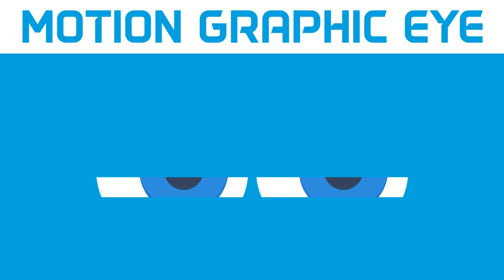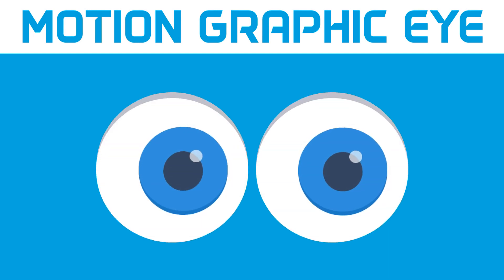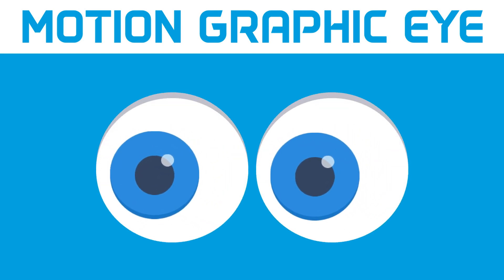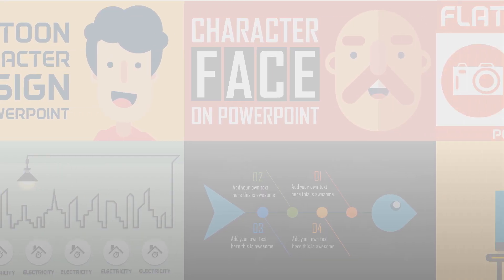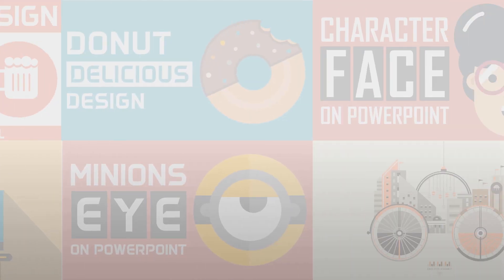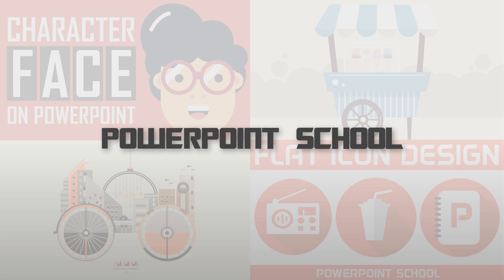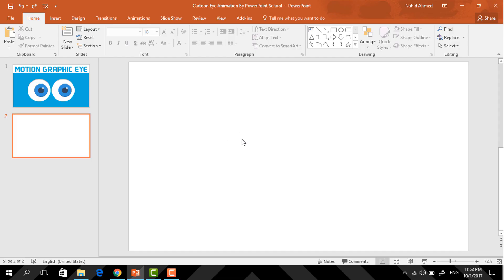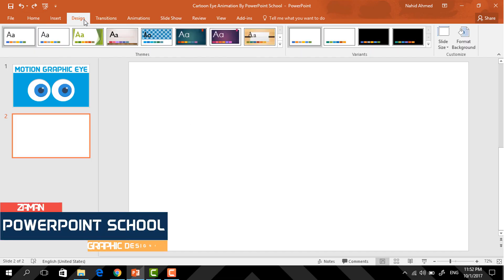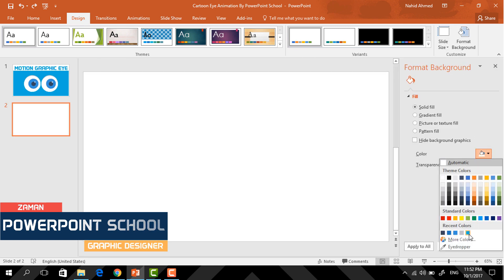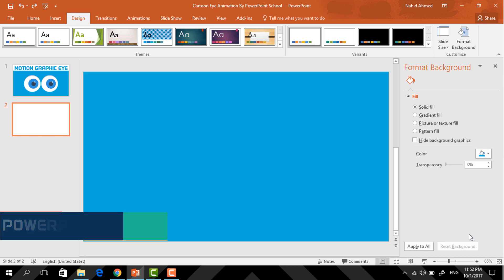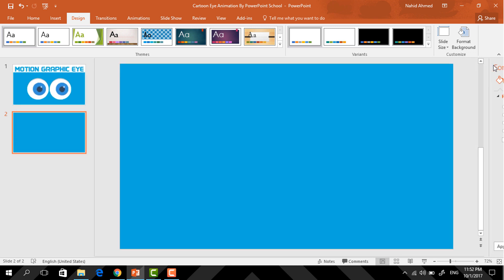Hello guys, in this tutorial I'm going to show you how you can make this motion graphic cartoon eye using PowerPoint. Without wasting your time, let's start creating. Here you can see I have already taken a blank slide, so first go to Design, click on Format Background, and from here I'm just changing the background color.